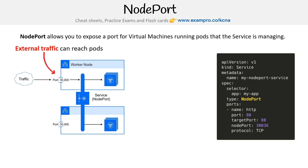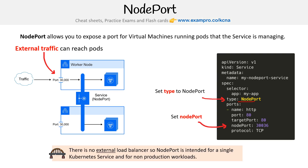This looks a lot similar to our ClusterIP manifest file, but here we're specifying NodePort, and now it has this target port. There is no external load balancer, so NodePort is intended for a single community service and for non-production workloads.